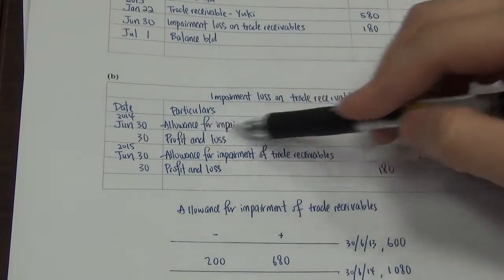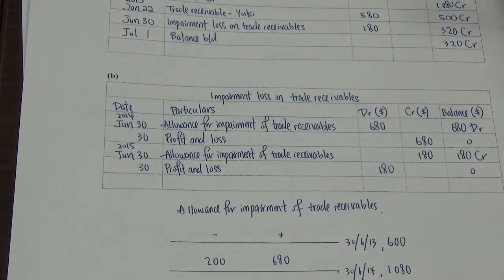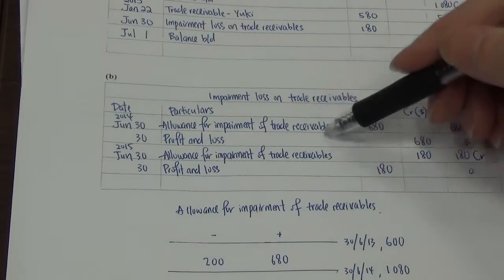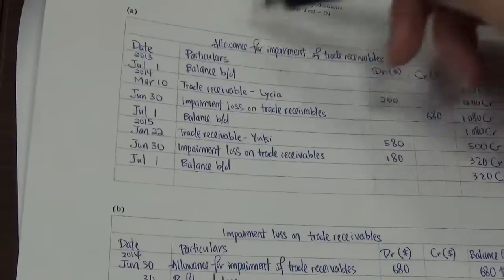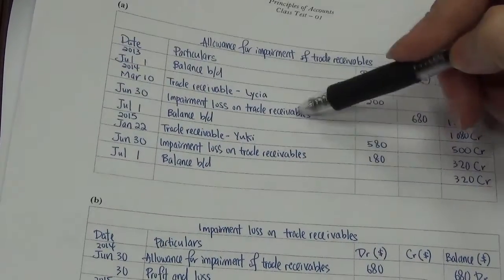If this is an impairment loss account, inside cannot have impairment loss again. It must be a different account. So take note, do not duplicate the account name. This is impairment loss. You will write allowance. This is allowance. Inside, we will write impairment loss.